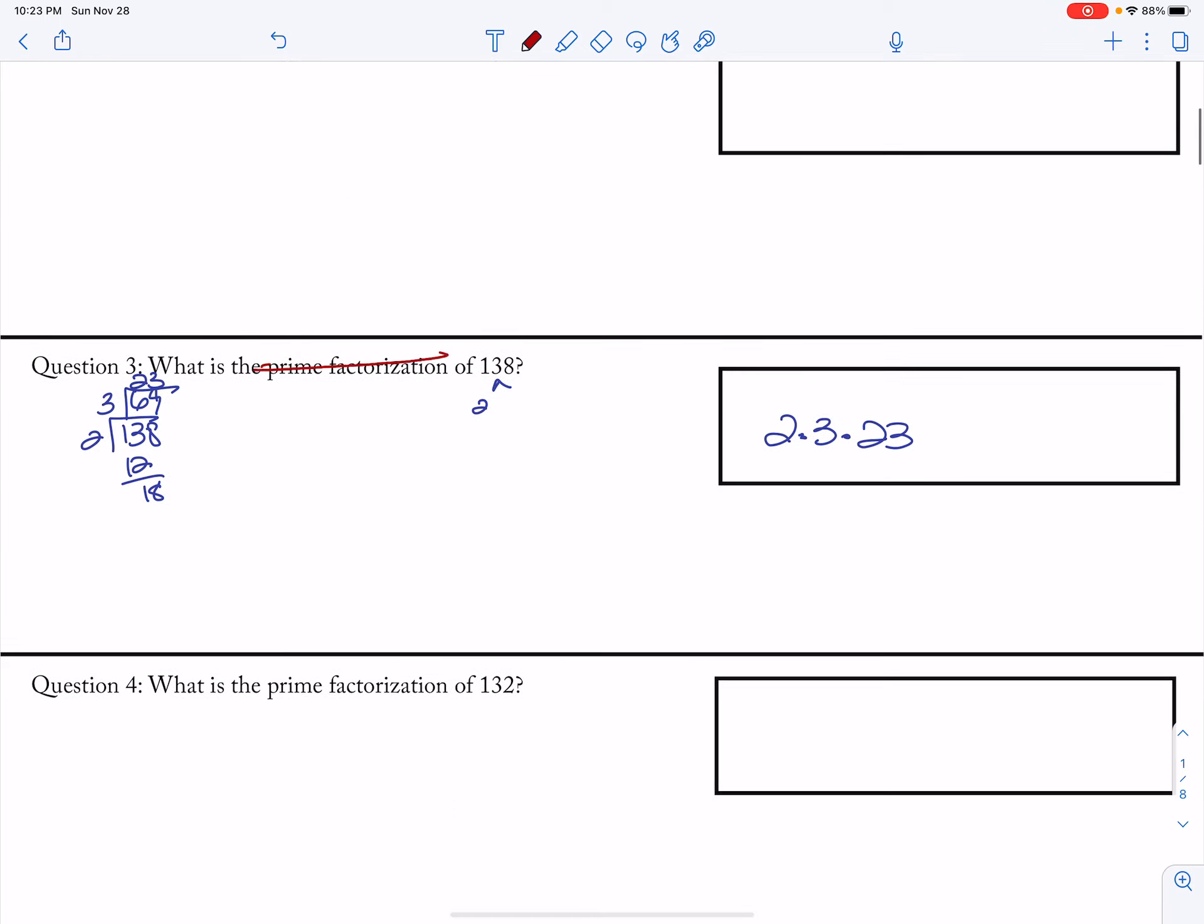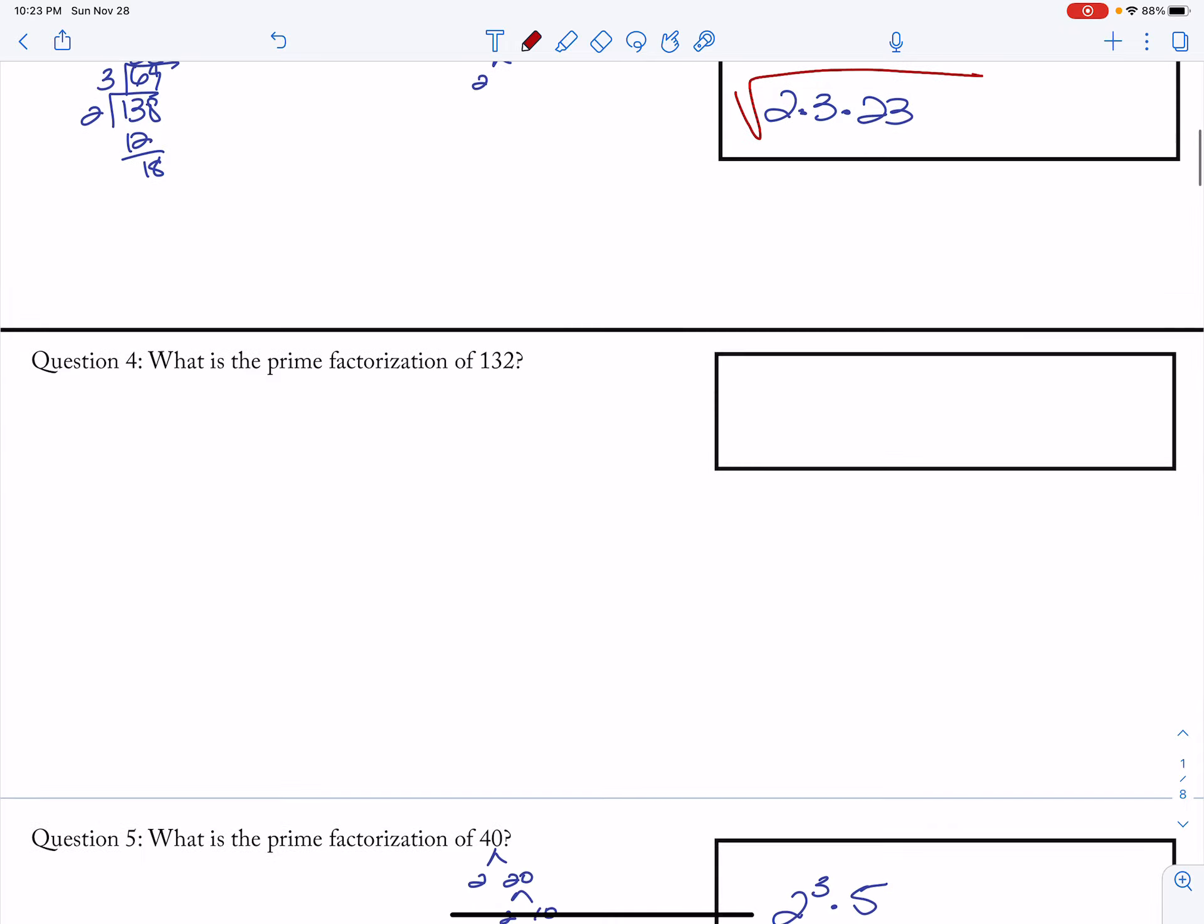So if I do the square root of this one, nothing changes. I can't pull anything out. There's no perfect squares there.